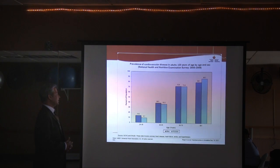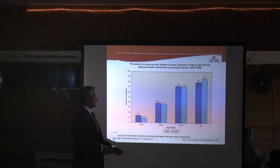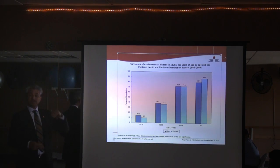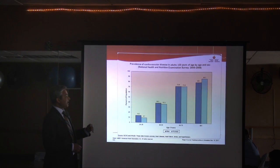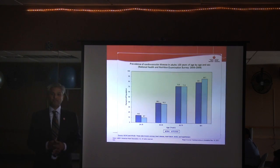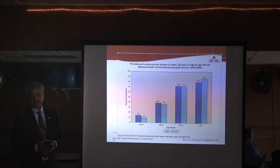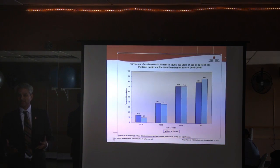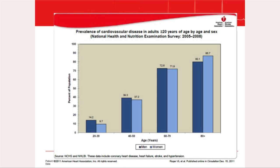In the 60 to 80 age group, prevalence goes up to about 70 percent. Once you're 80 or older, it's over 80 percent — almost 8 out of 10 people aged 80 have cardiovascular disease. This high prevalence with age is why it's important for us to learn about it, and to see how we can remain in that 20 to 30 percent who don't have it.